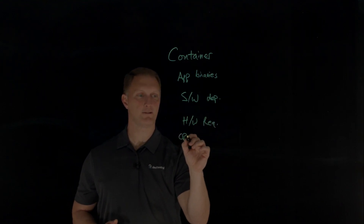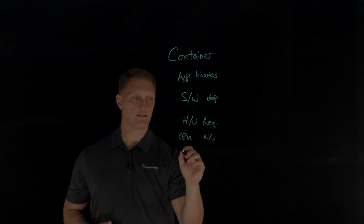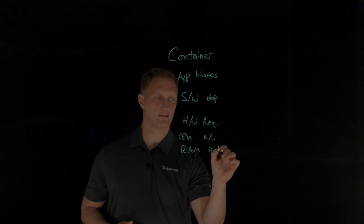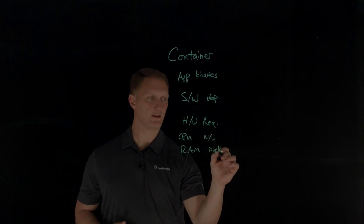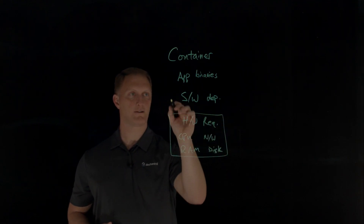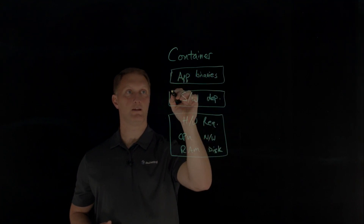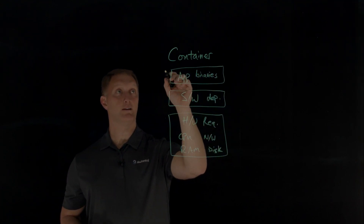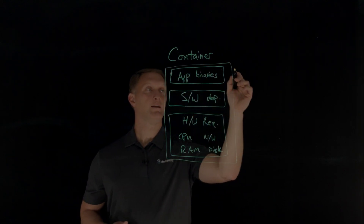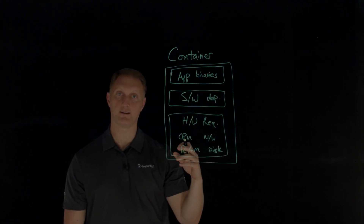The hardware requirements include things like how much CPU it needs, how much network capability it needs, how much RAM, maybe disk size or space — that kind of thing. So those are the hardware requirements. Chunking all of these together — the binaries, software dependencies, and hardware requirements — those would all be contained within one container. That would be the contents of the application container.